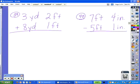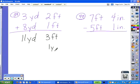39 and 40, we're adding and subtracting units of measure. 2 feet plus 1 foot would give us 3 feet. 3 yards plus 8 yards would give us 11 yards. Whenever you're adding, you have to see if there are enough of the smaller units to equal the larger unit of measure. Since 3 feet equals 1 yard, we're going to change the 3 feet into 1 yard. Add that to the 11 yards we already had to give us a total of 12 yards.